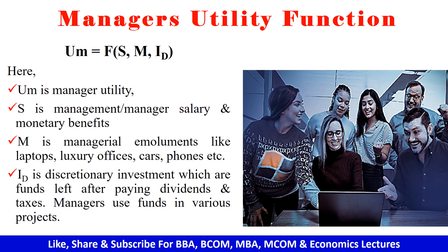The manager's utility is given by this formula: UM is equal to the function of S, M, and IT. Here, S is the salary and other monetary benefits given to the management. M is the management emoluments, which includes luxury offices, laptops, cars, phones, and other items. IT is the discretionary investment, which is the funds left after paying dividend and taxes. These funds are used by managers in various projects.